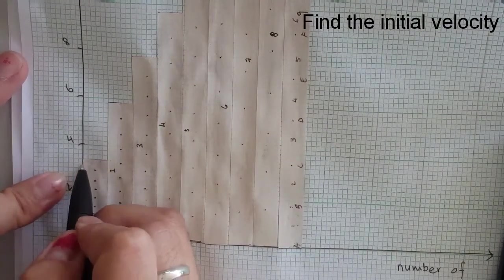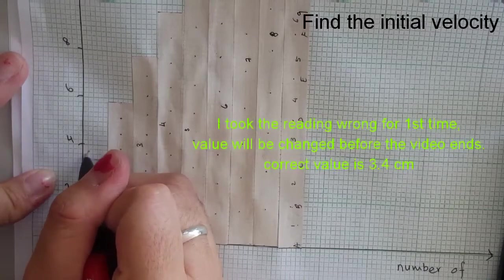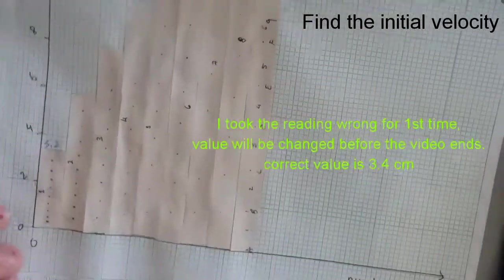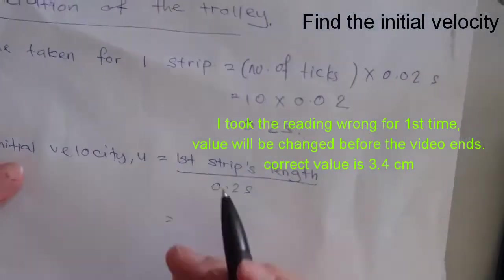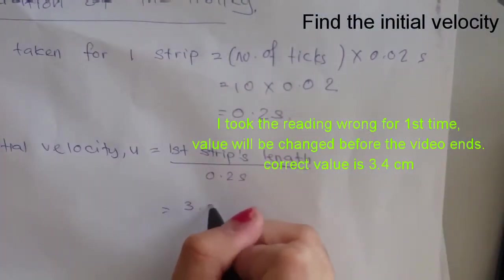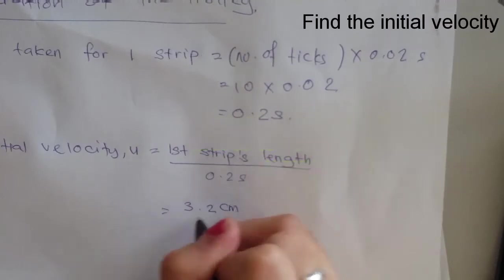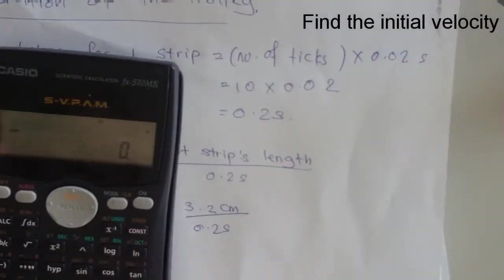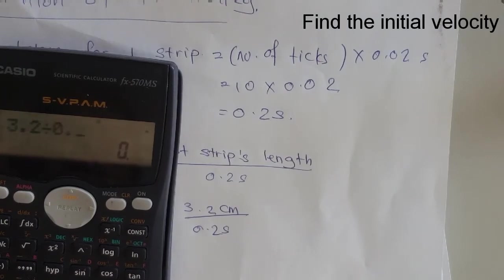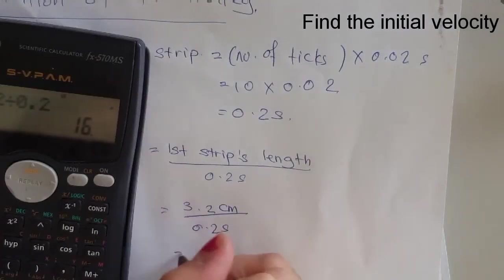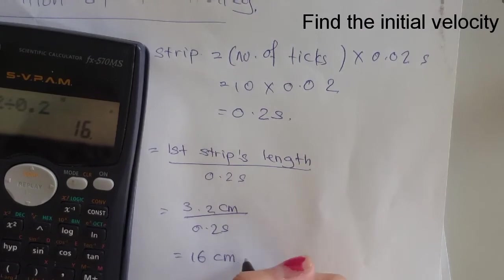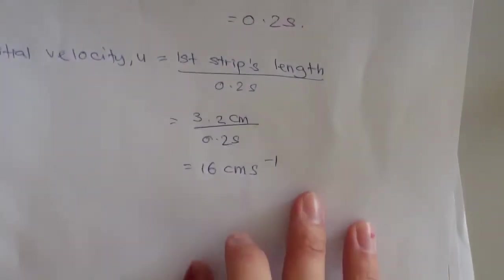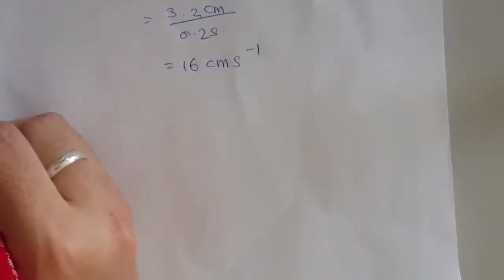So 3.1, 3.2. So my first strip is 3.2. So that would be 3.2 cm divided by 0.2 seconds. 3.2 divided by 0.2 I would get 16 cm per second. So that's the initial velocity.